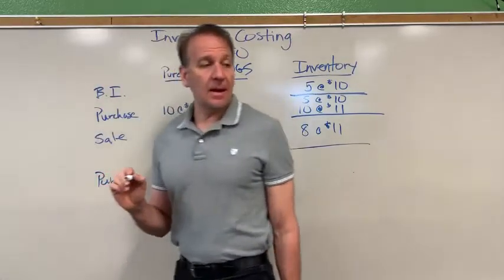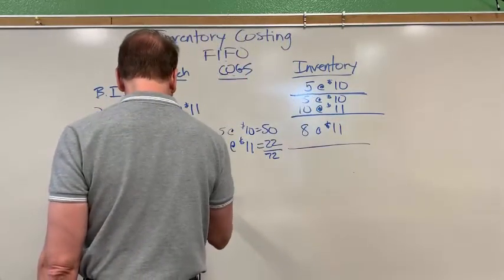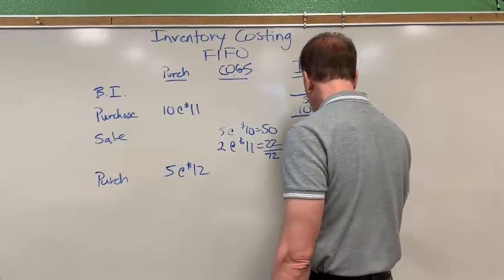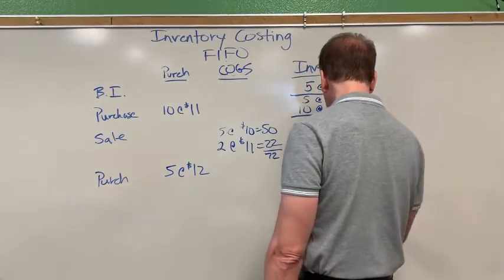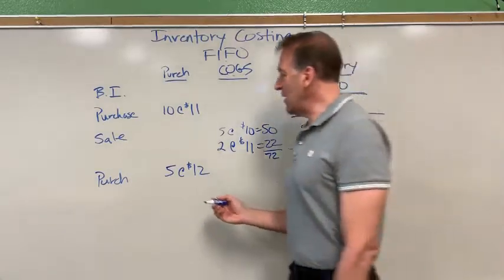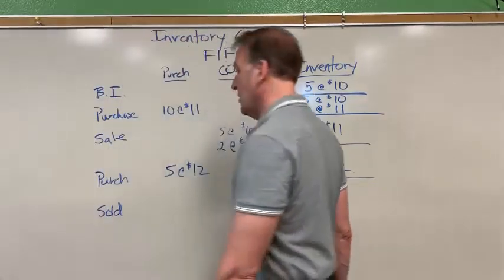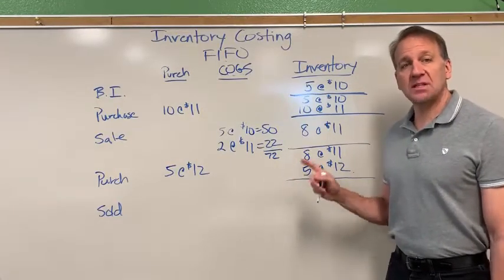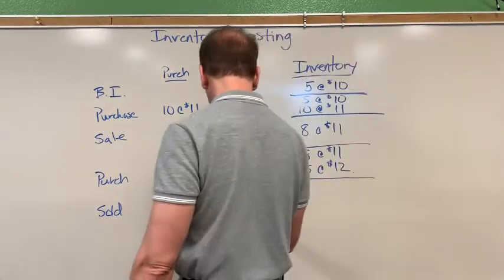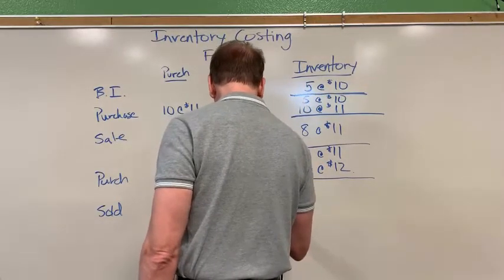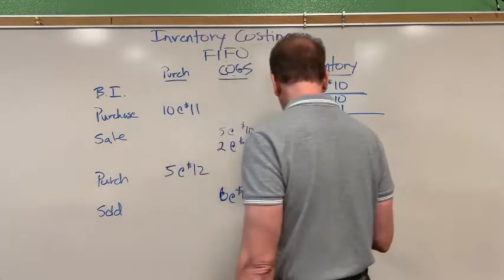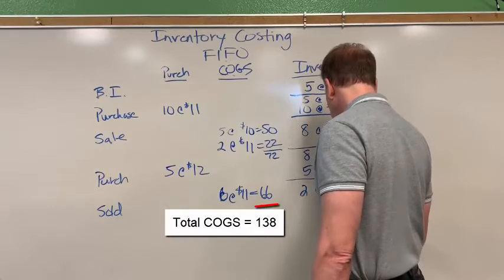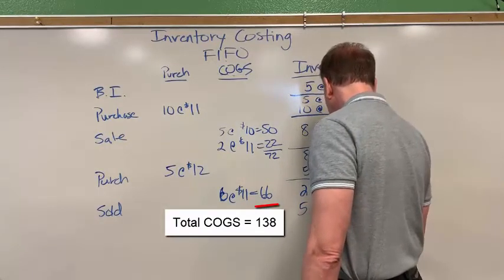Let's do a couple more examples. Let's say we purchase five more at $12. So now I've got eight at $11 and five at $12 — that's my inventory balance. Then let's say we sold six at $20. Using first in, first out, which six did we sell? The first ones. So we sold six at $11, which is $66 for my cost of goods sold. My ending inventory is two left at $11 and all five at $12.